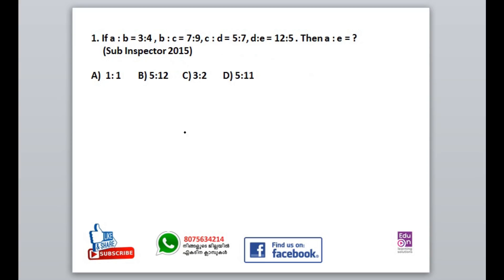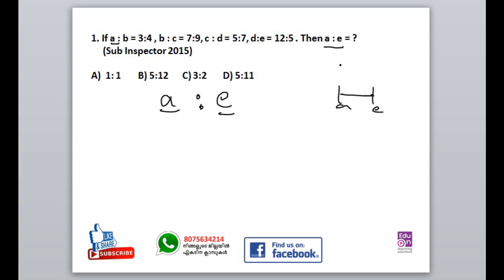This is all different. A to B, B to C, C to D, and D to E. If we have a shortcut method for this video, we have a shortcut method. So we will mark the values using this shortcut method.